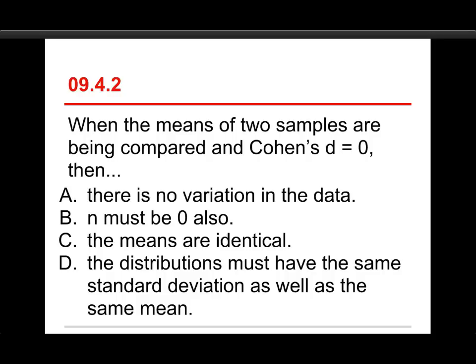Number two. When the means of two samples are being compared, and Cohen's d equals zero, then: A, there's no variation in the data; B, n must be zero also; C, the means are identical; or D, the distributions must have the same standard deviation as well as the same mean. Well, the answer is the means are identical.